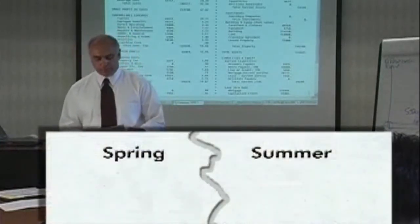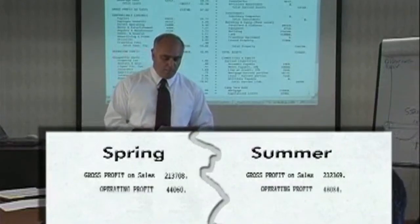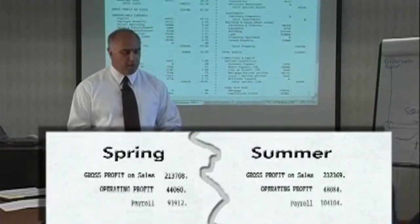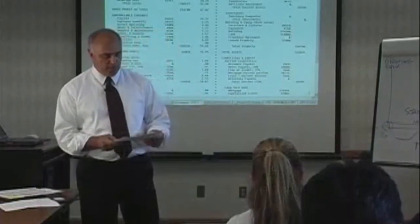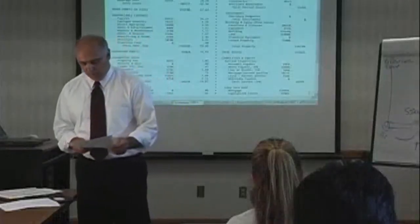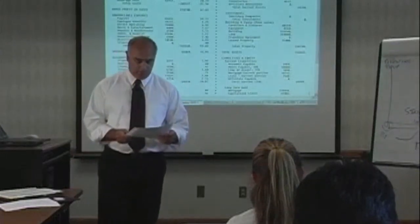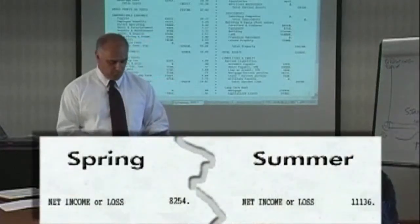Moving to the summer quarter — the end of the third period — sales are improving and operating profit continues to improve. Payroll has increased because the summer quarter in the region where our place is located is a strong business quarter. Management made deliberate plans to add additional payroll through additional FTEs and began to increase the wage rate to reward employees who have worked through six months of operation. The increase in sales has offset the payroll increase, and operating profit is now up to $48,084. Total occupation costs remain unchanged, and profit after tax has increased to $11,136.